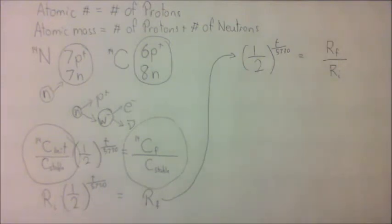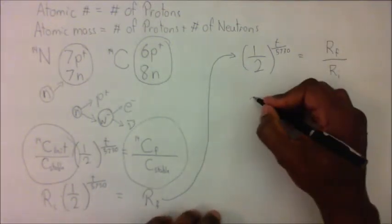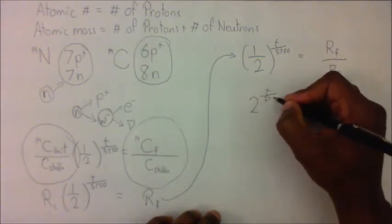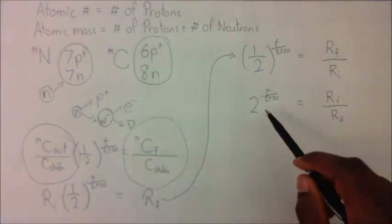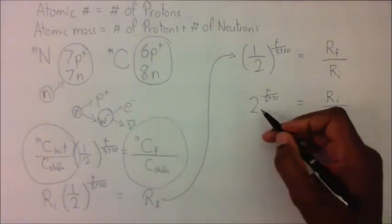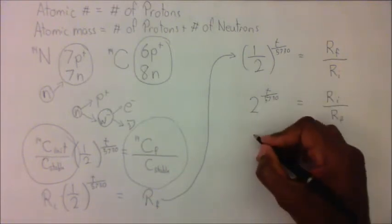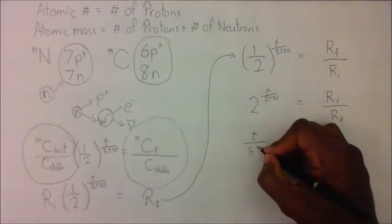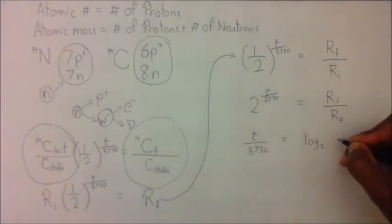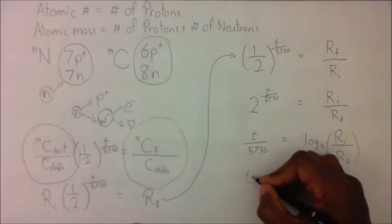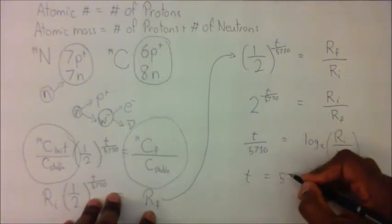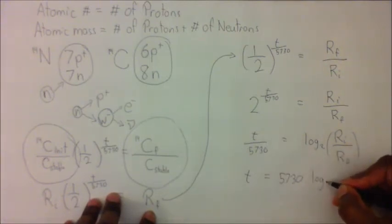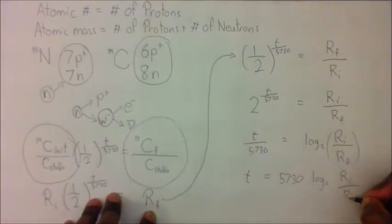And now what I shall do, I'll take the reciprocal, so 2 to the T over 5730 is equal to R sub I over R sub F. Now what I can do is take a log base 2 of both sides. So log base 2 of 2 raised to an exponent will give that exponent. So T over 5730 is equal to log base 2 of R_I over R_F. And which means that T, which is the time in years since the life form died, is going to be equal to 5730 times the log base 2 of R sub I over R sub F.